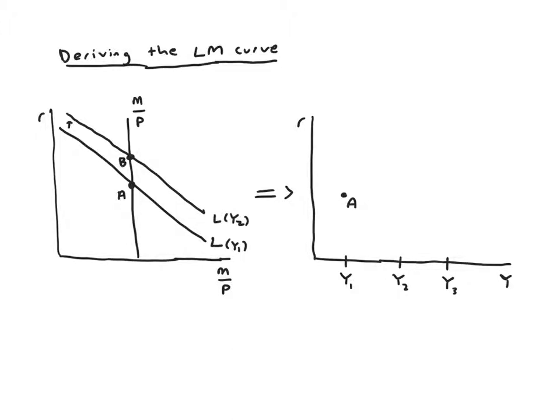So this is our L with income level 2 and it gives us a new equilibrium point B. And then we can plot that over here so the combination of y2 and the interest rate at point B looks like this.